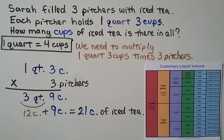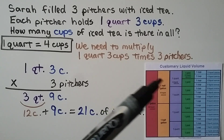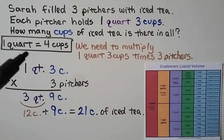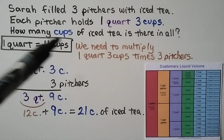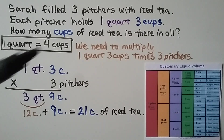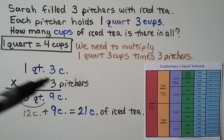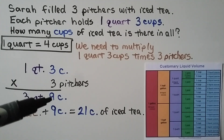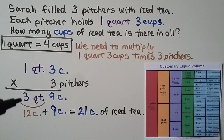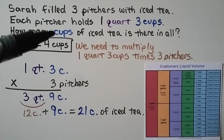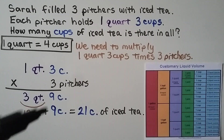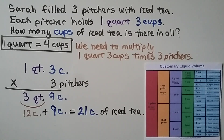Sarah filled three pitchers with iced tea. Each pitcher holds one quart three cups. How many cups of iced tea are there in all? One quart is equal to four cups. We multiply one quart three cups times three pitchers. Three times three is nine cups, and three times one quart is three quarts. We have three quarts and nine cups, which we need to convert to all cups. Three quarts times four cups each is twelve cups, plus nine cups equals twenty-one cups of iced tea.